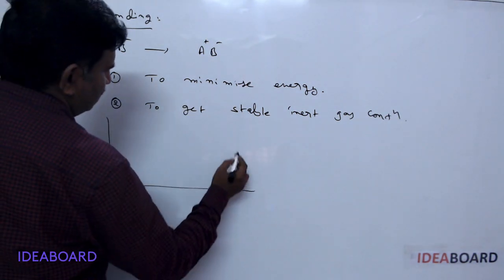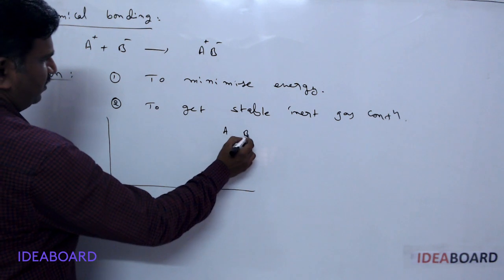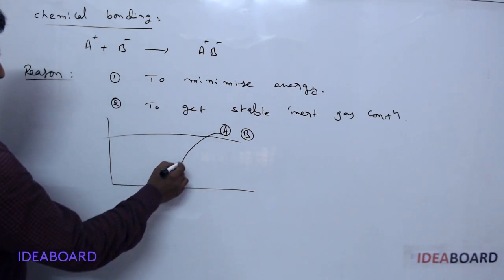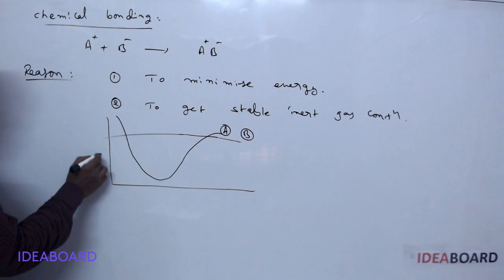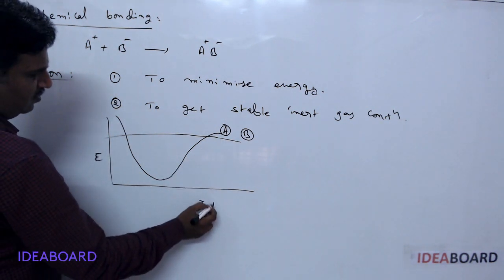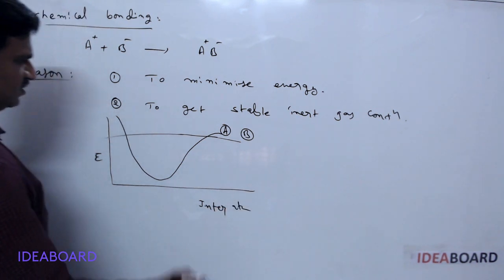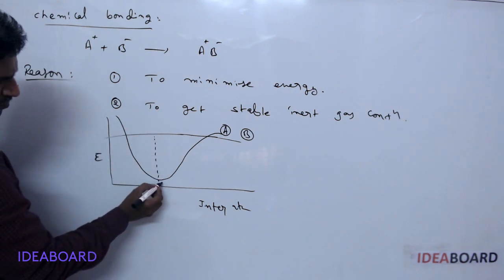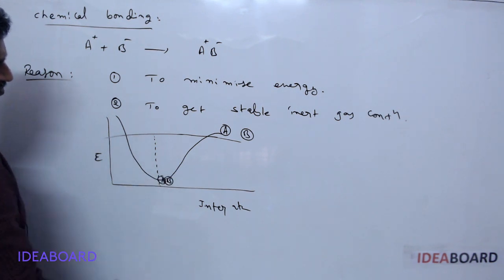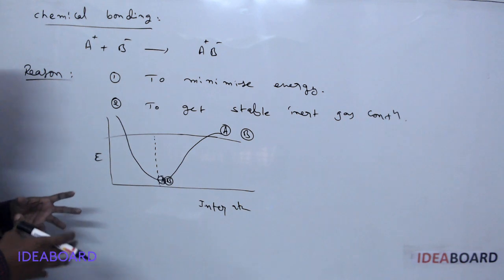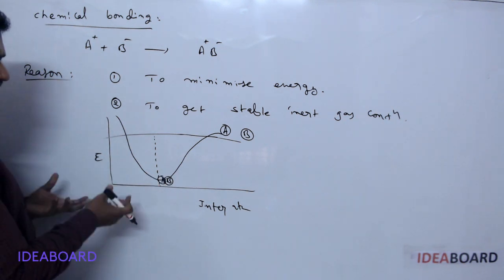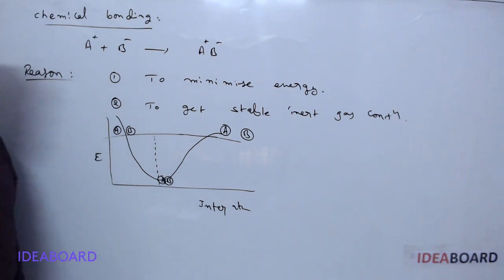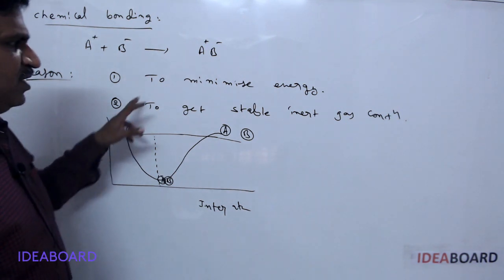Suppose we take a graphical representation. Here we are taking A and B as two atoms. There is an equilibrium distance between them. Whenever they are mixing, the energy decreases and then slowly increases. Here it is the energy curve, and the x-axis is the interatomic distance. Whenever they are combining, the system reaches minimum energy. At this minimum energy, A and B combine and form a molecule. When they come very close, the repulsion between them increases and they become far apart from each other. So a chemical bond is formed to minimize the energy.